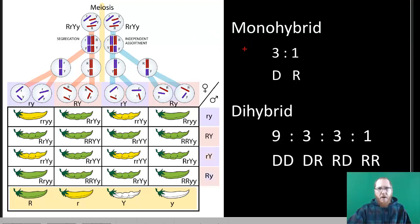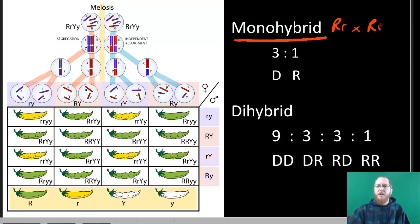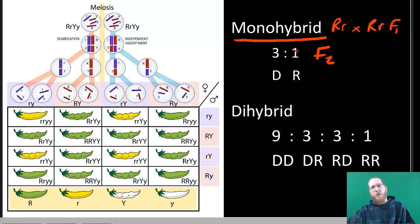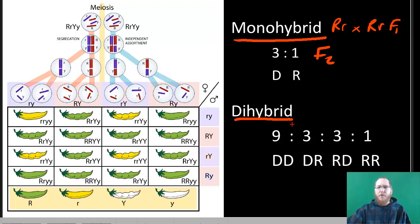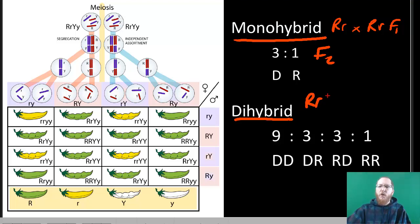Now let's discuss what Mendel did in his last set of experiments. The first thing was monohybrid crosses, where he got an F2 ratio of three dominant to one recessive every time — three tall to one short, three purple flower to one white flower, three yellow peas to one green pea, and so on. Then he said, let me look at two traits at the same time. He called this a dihybrid cross: he crossed individuals homozygous dominant for two traits with individuals homozygous recessive for two traits, producing an F1 generation that was heterozygous for both traits. Then he crossed those F1s.